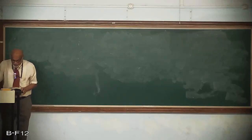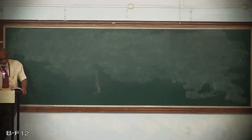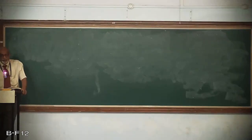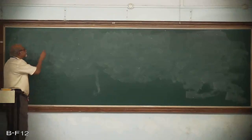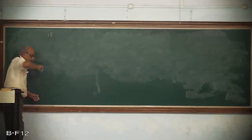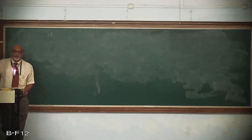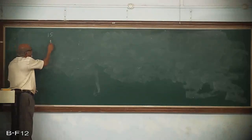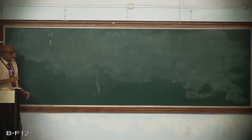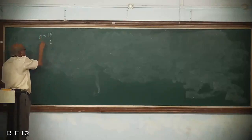A single sampling plan uses a sample size of 15 and an acceptance number of 1. So N is equal to 15 and C is...